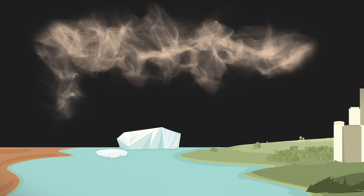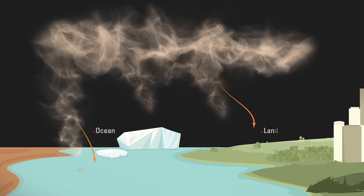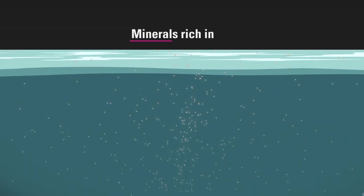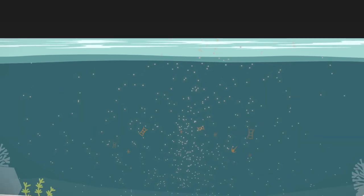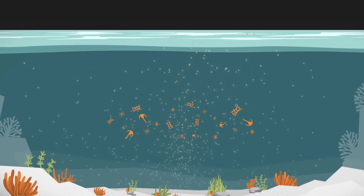After dust is transported, it is deposited over the ocean, land and glaciers. In the ocean, mineral dust provides nutrients like iron and phosphorus to ecosystems, which boosts primary production.